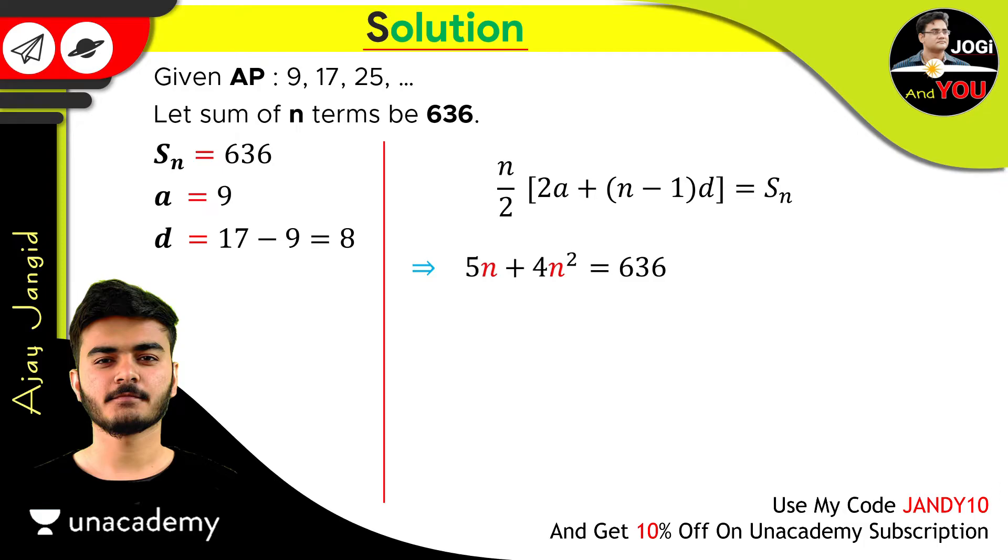Transfer this 636 to the left. Rearrange high power term to the left also. So, now we have 4n square plus 5n minus 636 is equal to 0. So, we have a quadratic equation here.